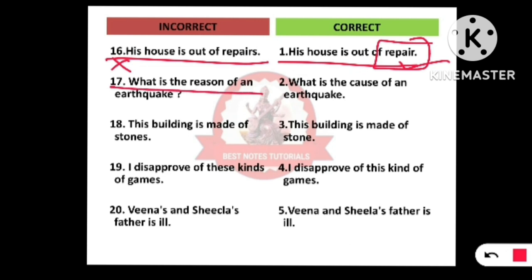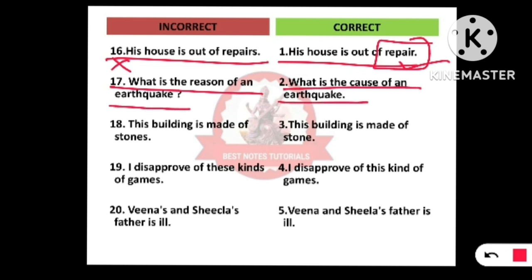Next example: 'What is the reason of an earthquake?' The correct word is 'cause,' not 'reason.' It should be: 'What is the cause of an earthquake?'